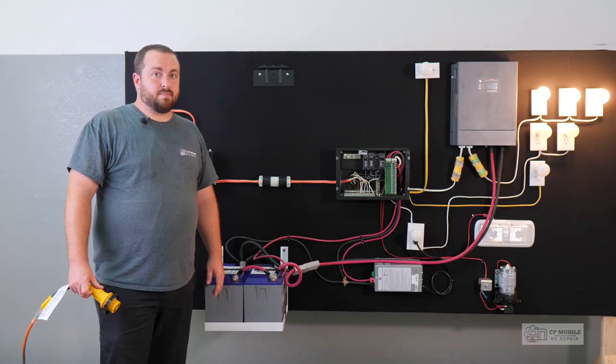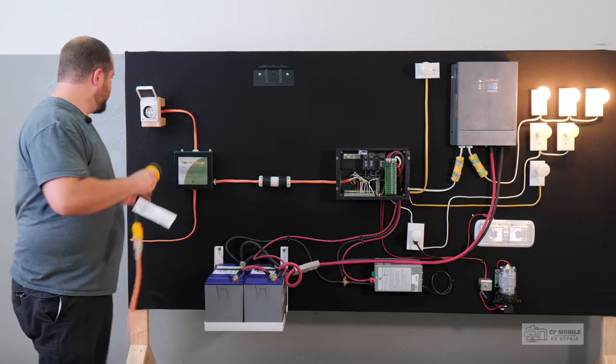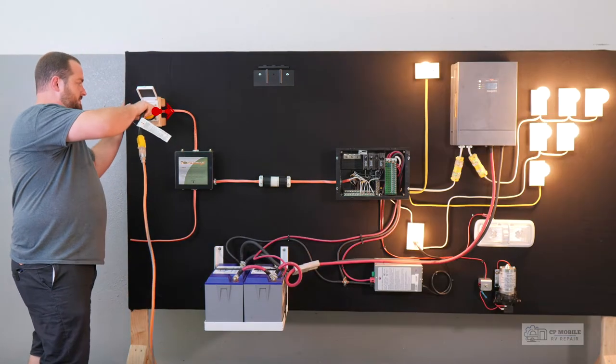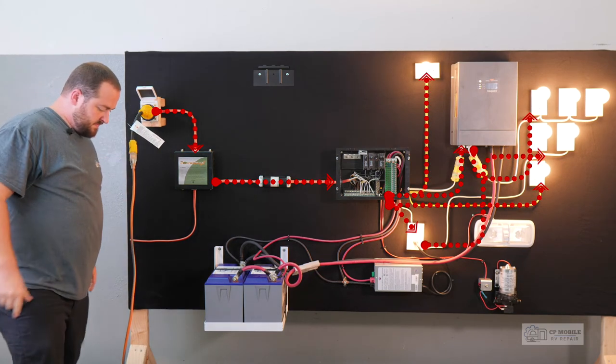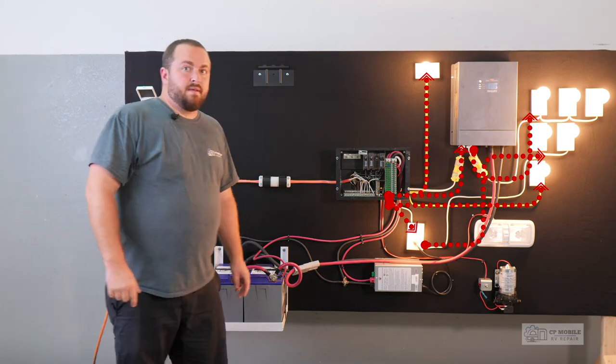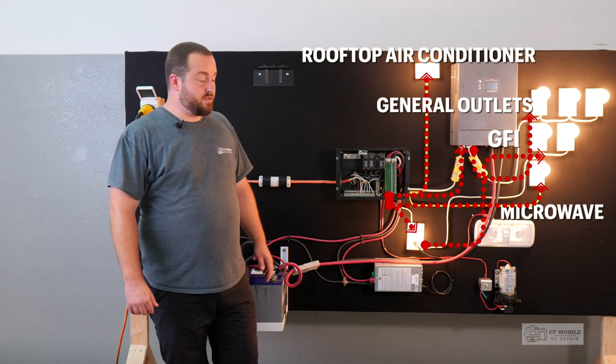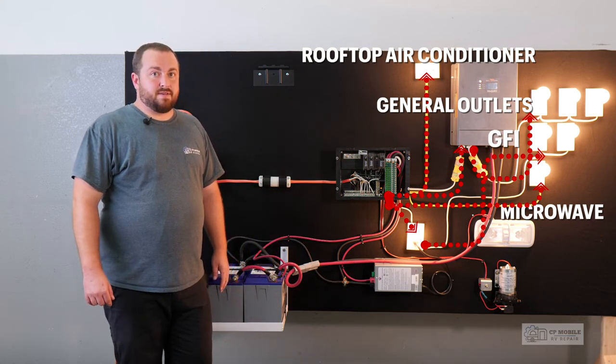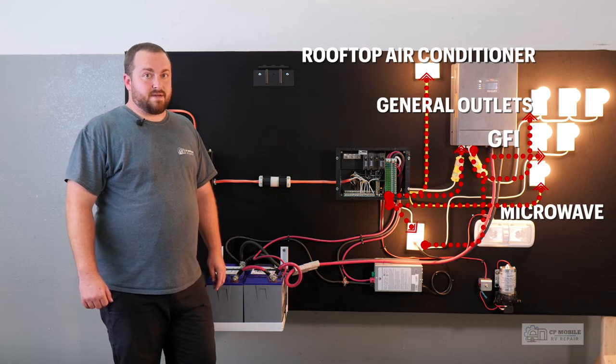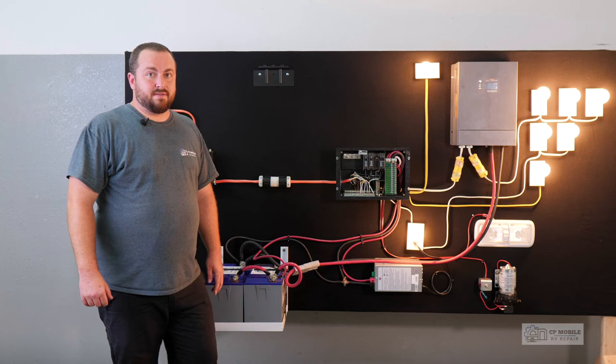Now, if we plug our system back into shore power, we can see the automatic transfer switch function of the inverter come into play. Now we have power coming in from the shore power inlet through the power distribution to all of the breakers. When the inverter detects that we have power coming in from another source, it simply allows that power to flow through it, or to bypass the inverter, and go to the outlets.